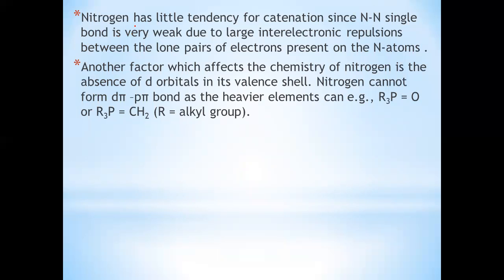Nitrogen differs from the rest of the members of this group — phosphorus, arsenic, antimony, bismuth — due to its small size, high electronegativity, high ionization energy, and non-availability of d orbitals. Nitrogen has the unique ability to form pπ–pπ multiple bonds with itself and with other elements. Heavier elements of group 15 do not form pπ–pπ bonds as their atomic orbitals are large and diffuse, and they cannot have effective overlapping.